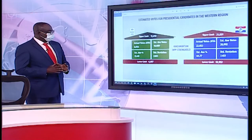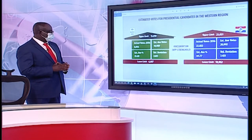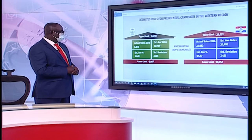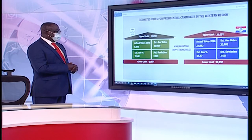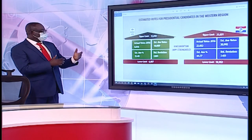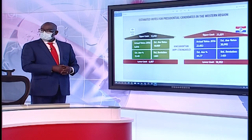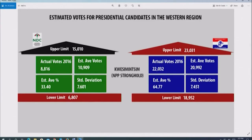In the next NPP stronghold, NPP's estimated average is 64.77%, translating to about 21,000 votes. They actually had 22,000 — an excess of about 1,000 votes. NDC's estimated average was nearly 11,000, but they had just about 8,000, dropping about 2,000 plus votes.